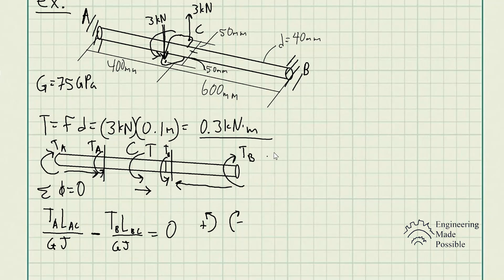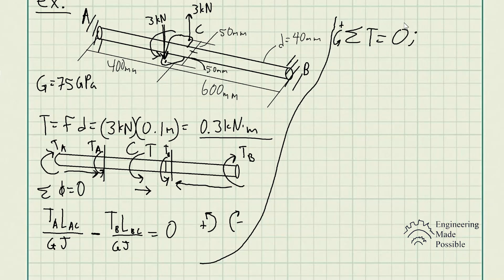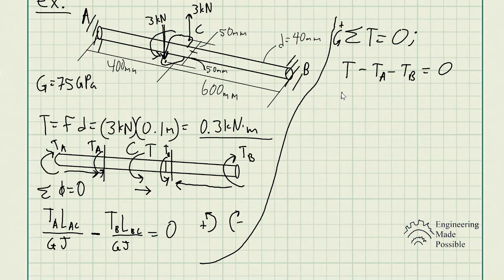The second relationship is the sum of torques equal to zero, using counterclockwise as positive. The applied torque T is positive (counterclockwise), while T_A and T_B are clockwise (negative). So: T minus T_A minus T_B equals zero. Rearranging gives T_A equals T minus T_B. We substitute this expression into the sum of angle of twist equation.